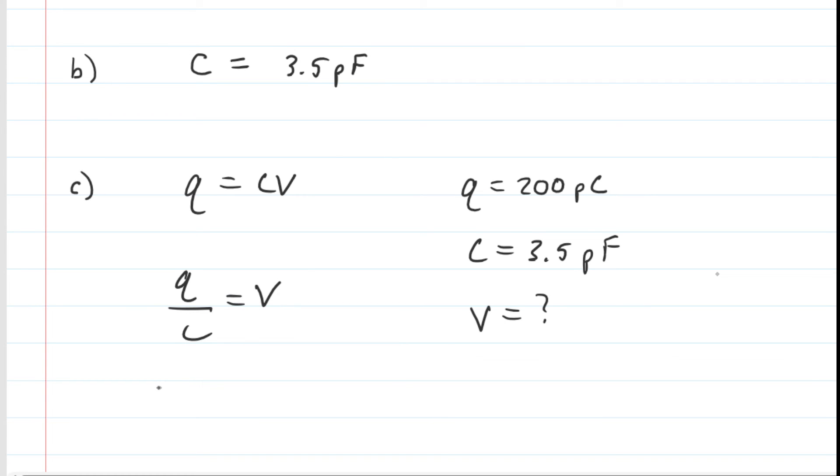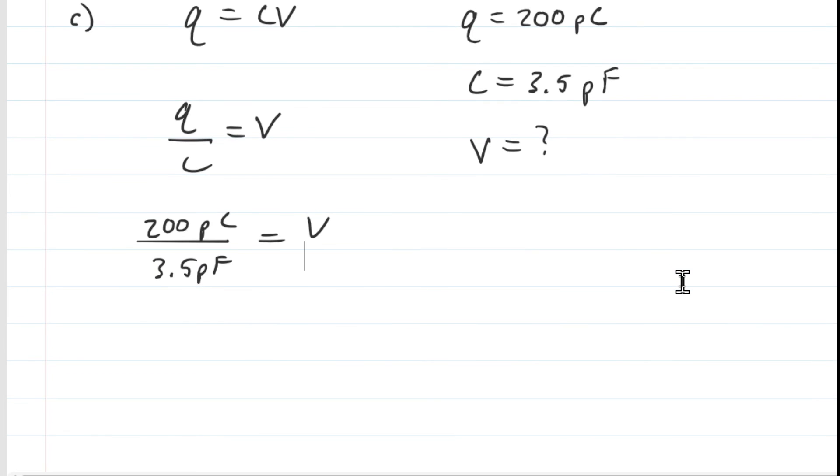We can plug in the known values. We've left them in terms of pico, so picocoulombs and picofarads. That's great because then we still end up with the standard unit of volts here, which is around 57 volts. So that would be the new potential difference between those two metal objects once we've increased the charge.